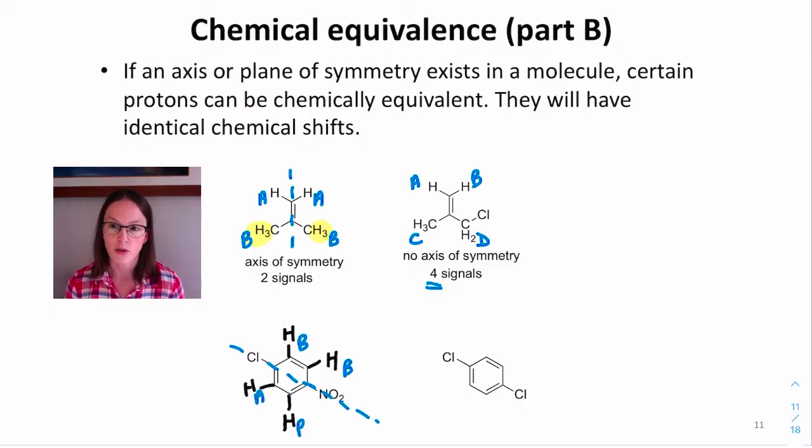Then there are two protons we can call HB. They're closer to the nitro group, or ortho to the nitro group. The HA's are chemically equivalent to each other, and the HB's are chemically equivalent to each other. We expect to see two signals in the proton NMR spectrum.